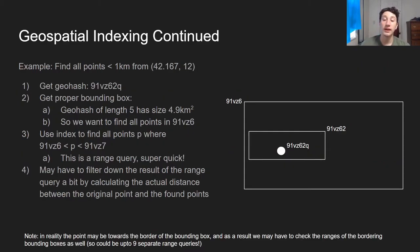I'm going to provide an example of this. Imagine we want to find all points that are less than a kilometer from this random latitude and longitude. First we get the geohash of that, assuming there's some API to call. That's not the real geohash of the point, I just made it up. Then we get a proper bounding box. The geohash of length five has a size 4.9 kilometers squared. If that's the case, all of the points that we want, which are within a kilometer, are probably going to be in the corresponding length five geohash. So we truncate our original geohash to length five and look at all points in 91VZ6.